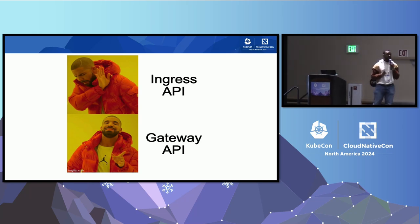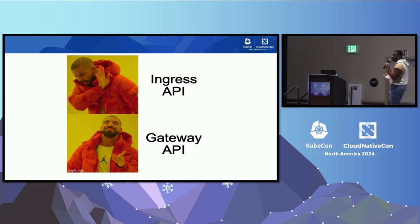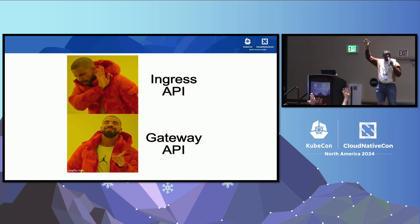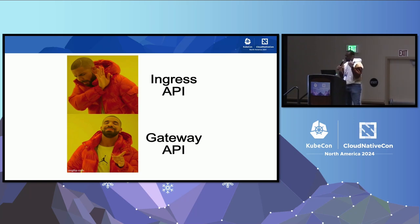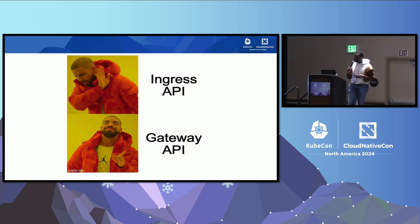That doesn't mean that the ingress API is going away. If you're here for this talk, you're probably using ingress somewhere in your Kubernetes clusters. Ingress API is a V1 API in Kubernetes — it's not going away anytime soon. However, if you look at the Kubernetes documentation, it's been mentioned that the ingress API has been frozen. So no new features. Your ingress API implementations should still be doing CVE patches and things of that nature.